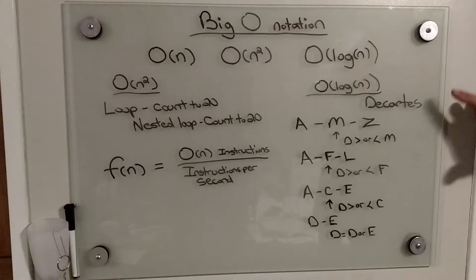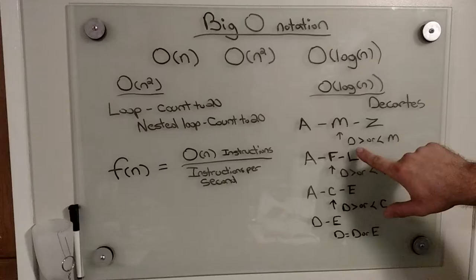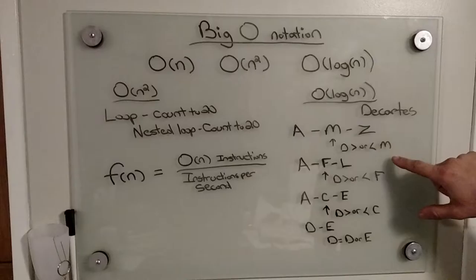With an O(log n) type of set of instructions, what this would do is this would actually divide your set in half with each iteration. So with the first one, where you have A to Z, M is your midpoint.